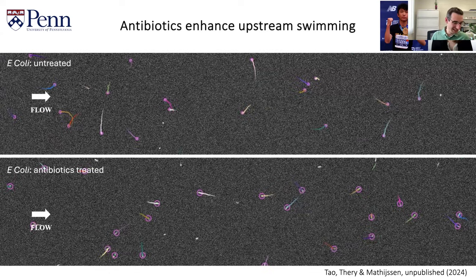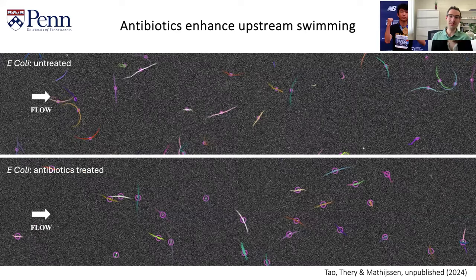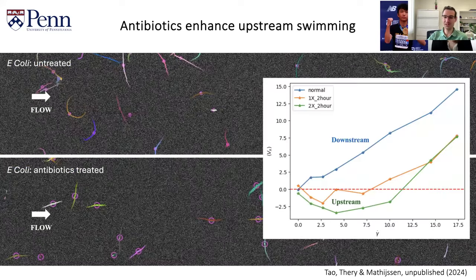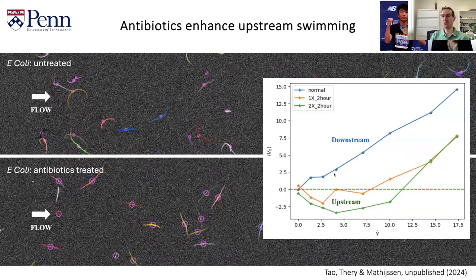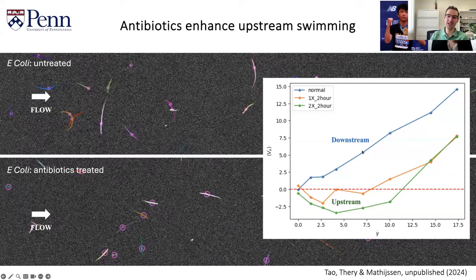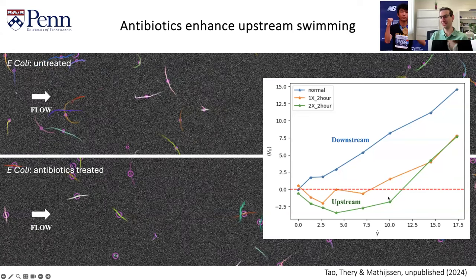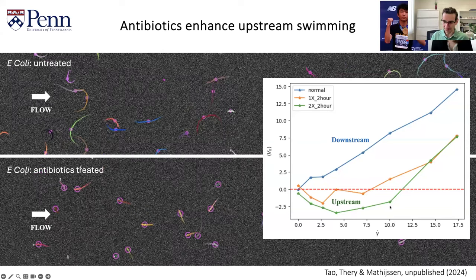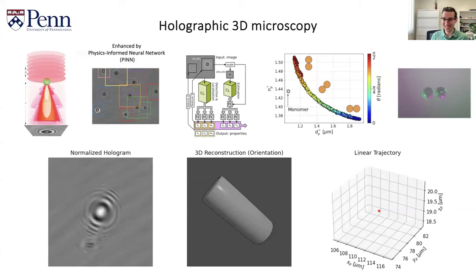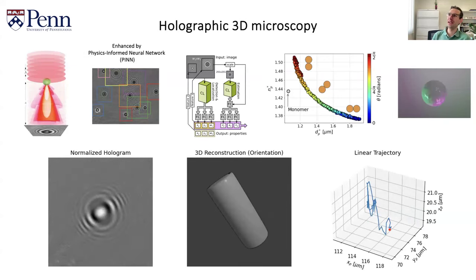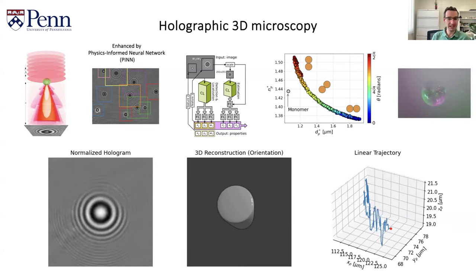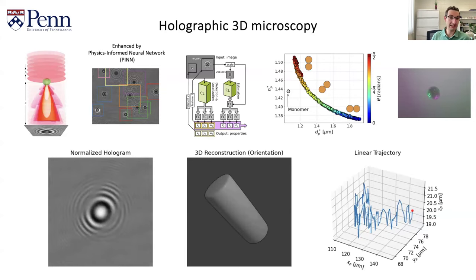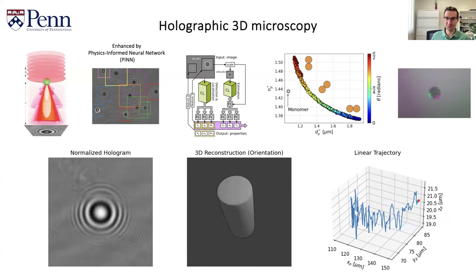We thought maybe we could prevent this upstream swimming by giving the bacteria antibiotics. The result was rather remarkable: the cells treated with antibiotics actually got better at moving upstream. The blue curve shows the wild-type untreated cells — on average they mostly go downstream. But the ones treated with antibiotics, the green curve, have a much larger tendency to move against the flow. We're trying to understand this with holography, and we think it's related to cell shape. The antibiotic was cephalexin, which targets cell division, so cells tend to grow longer. There's probably a correlation between cell length and the ability to move upstream.